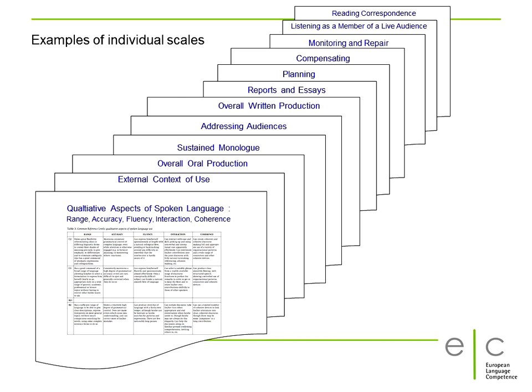It may be worth mentioning that of the 54 descriptive scales included in the CFR, only four have accuracy as their focus — that's grammar, vocabulary, pronunciation and orthography. Four out of 54. All other scales refer to genuinely communicative skills, thus underlining the communicative approach of the CFR.